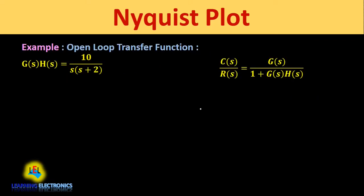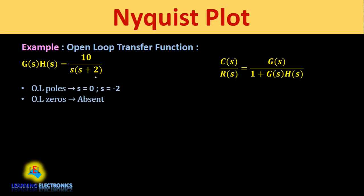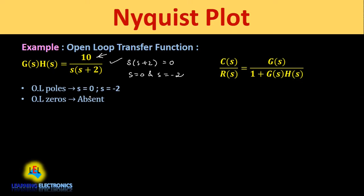Now let us take one example. The open loop transfer function G(s)H(s) = 10 / [s(s+2)]. From this we will find the open loop poles and open loop zeros. Equating the denominator s(s+2) = 0, we get two roots: s = 0 and s = -2. These are the open loop poles. Since the s-term is absent in the numerator, open loop zeros are absent in this transfer function.